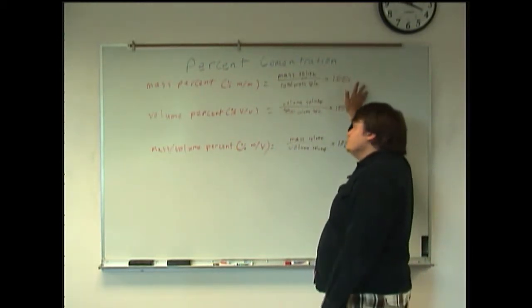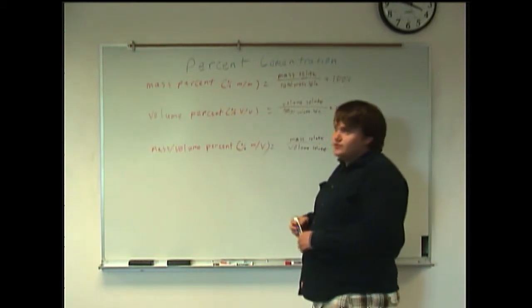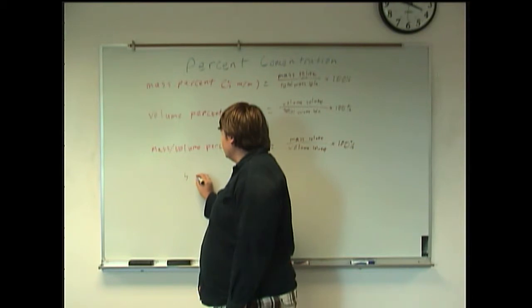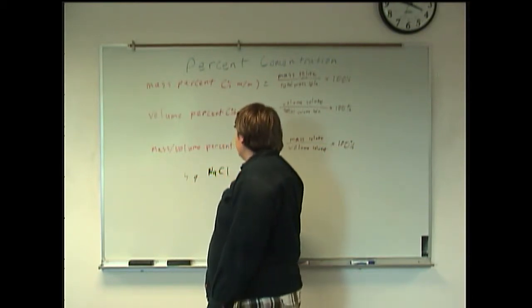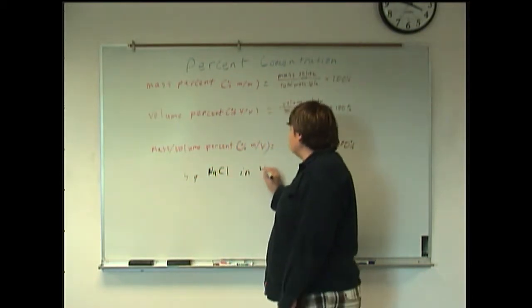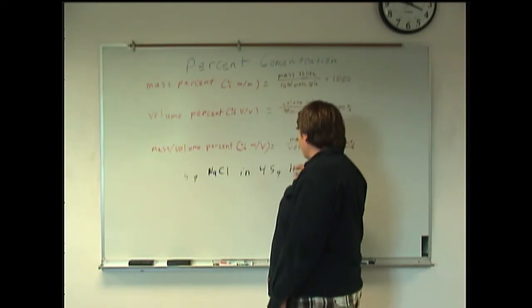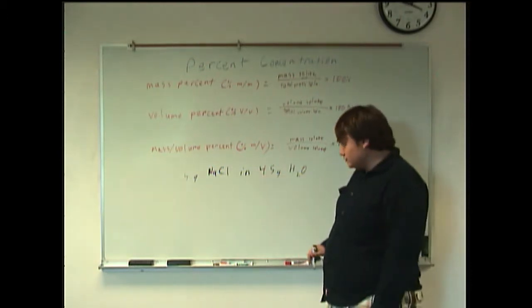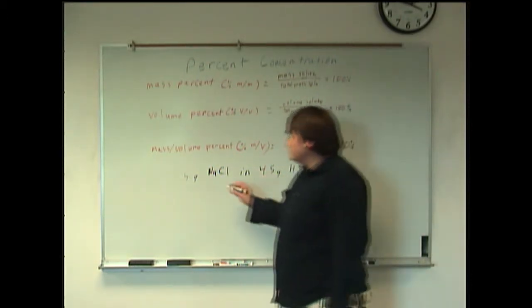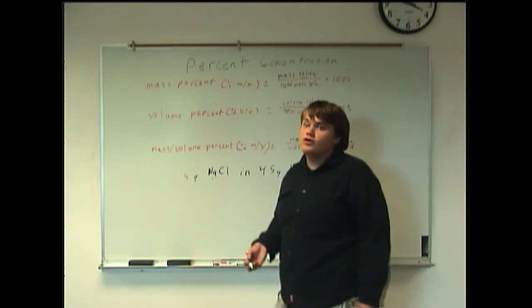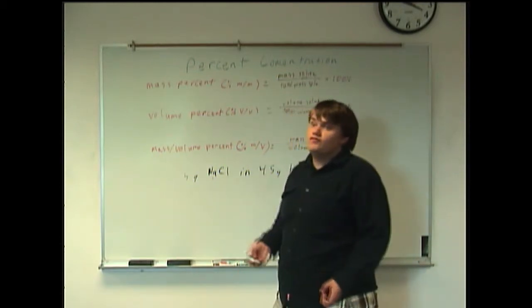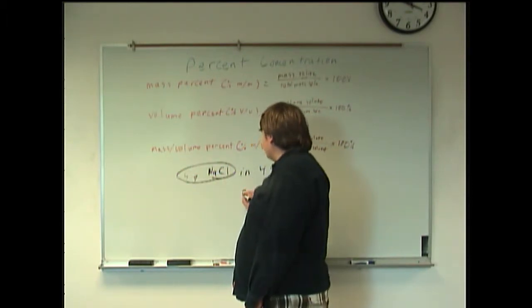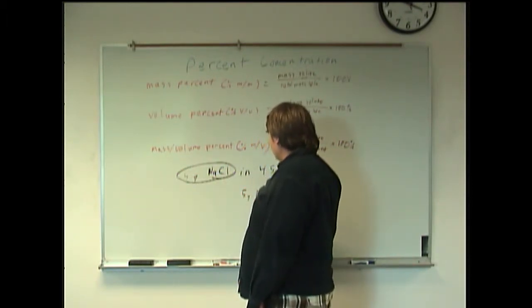Then, of course, times 100 to get the percent. An example of this would say we had five grams of sodium chloride dissolved in 45 grams of water. You want to find a mass percent of that solution. Well, the NaCl, the sodium chloride, that's what's being dissolved. That is our solute. And so that's going to go on top, five grams of sodium chloride.